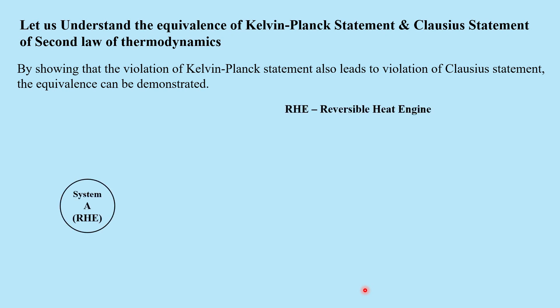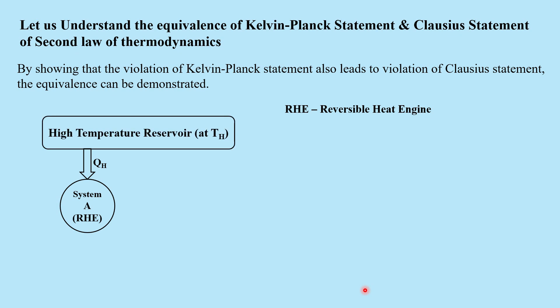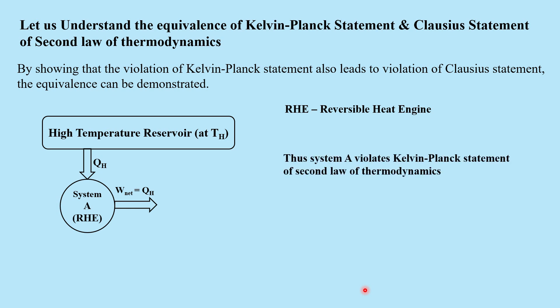To understand this, let us take System A here, which is a reversible heat engine to which QH amount of heat is supplied from a high temperature reservoir. This reversible heat engine converts the total amount of heat received into work output. Thus, System A violates the Kelvin-Planck statement of the second law of thermodynamics.